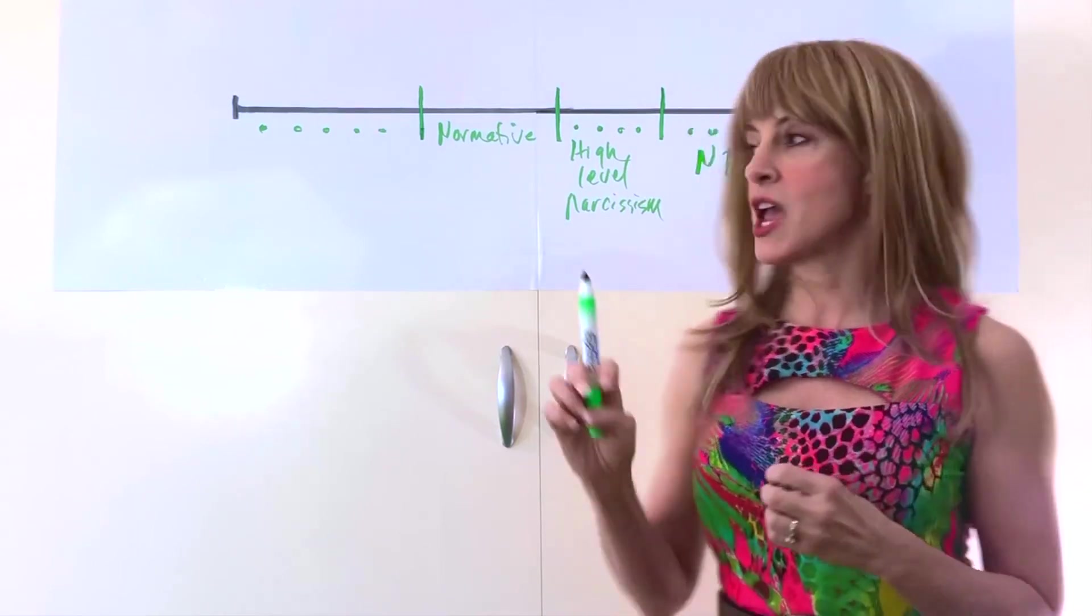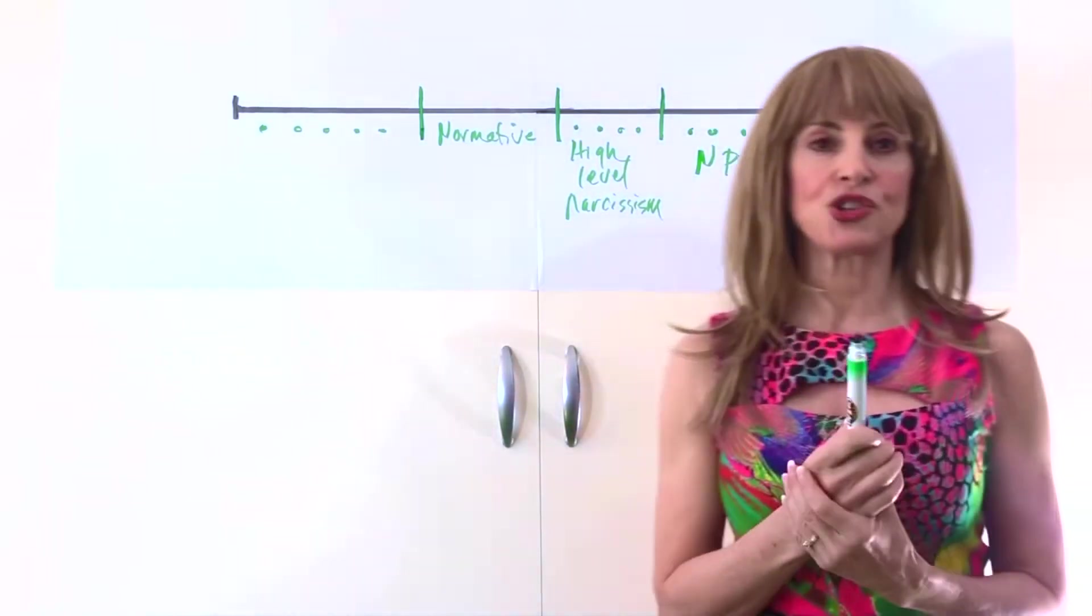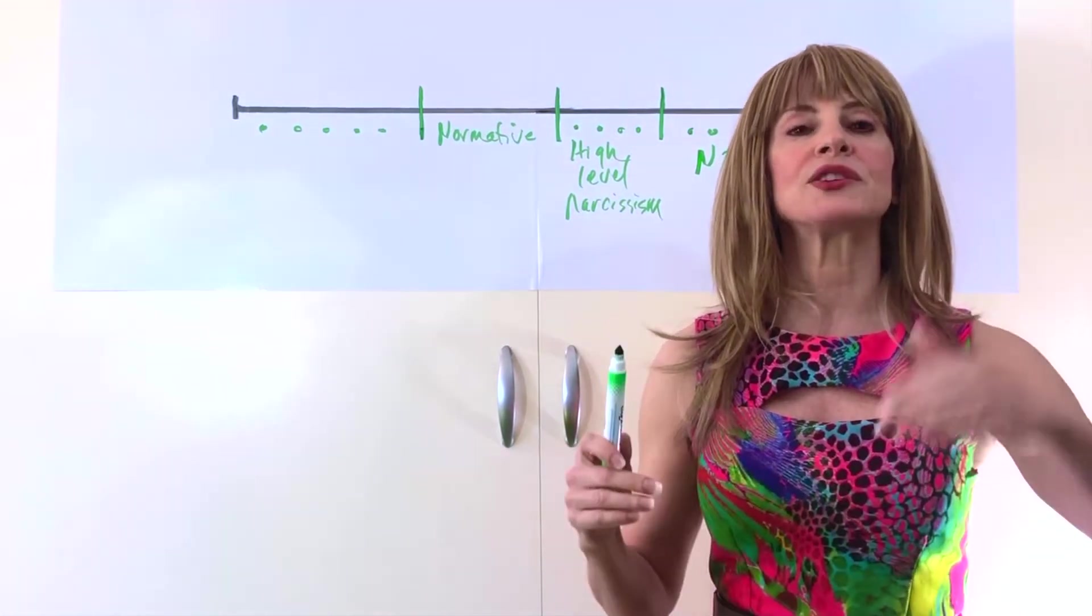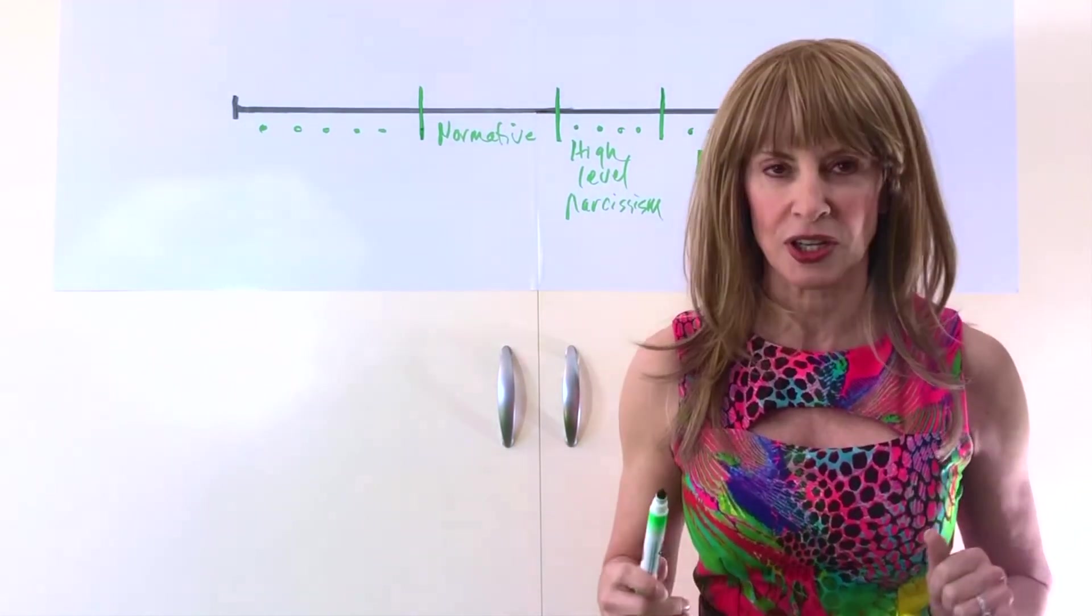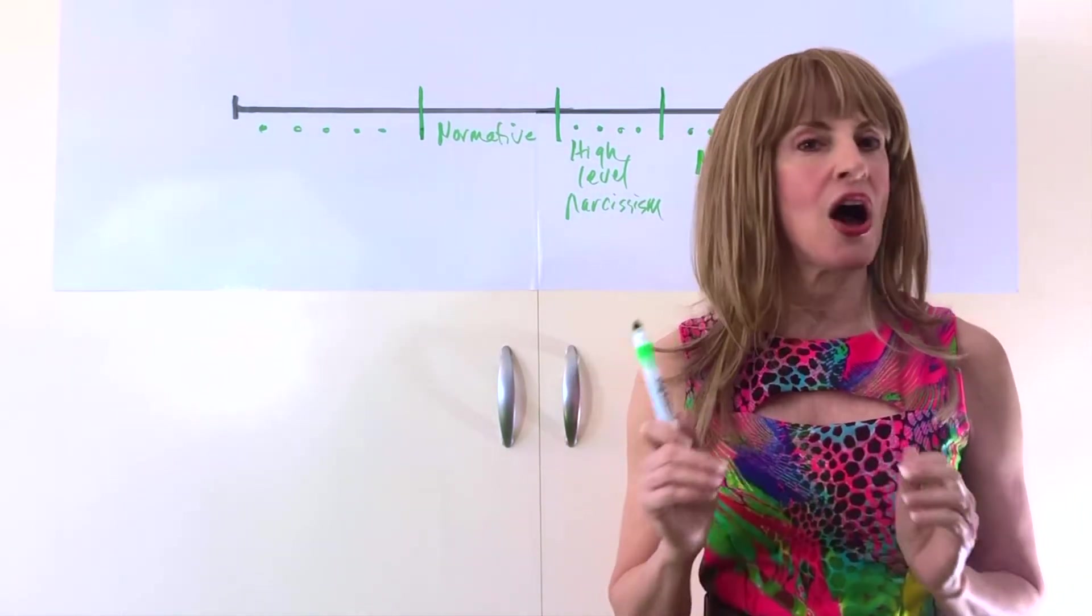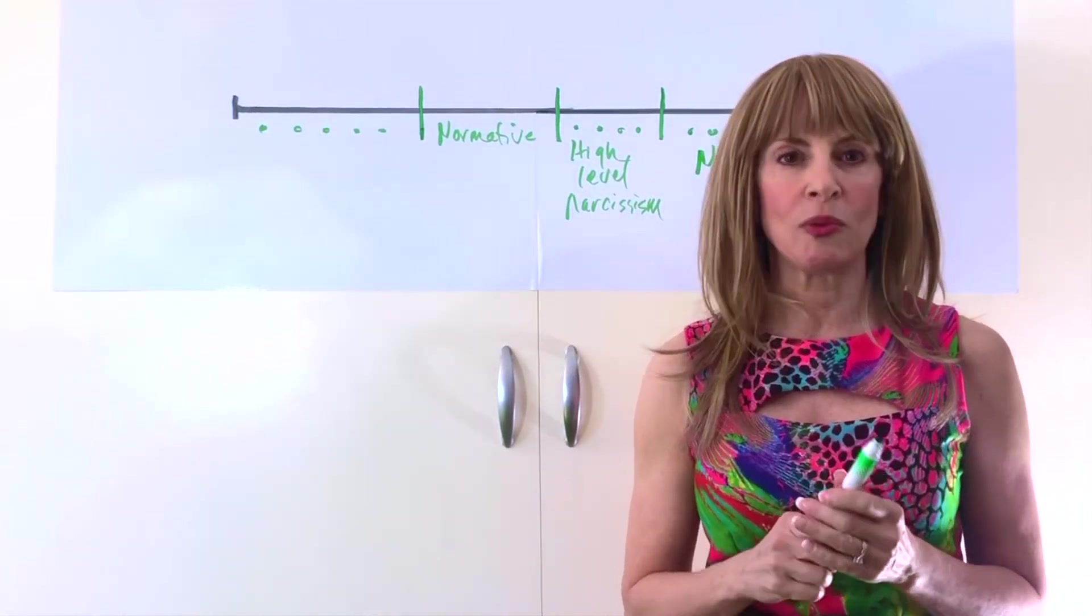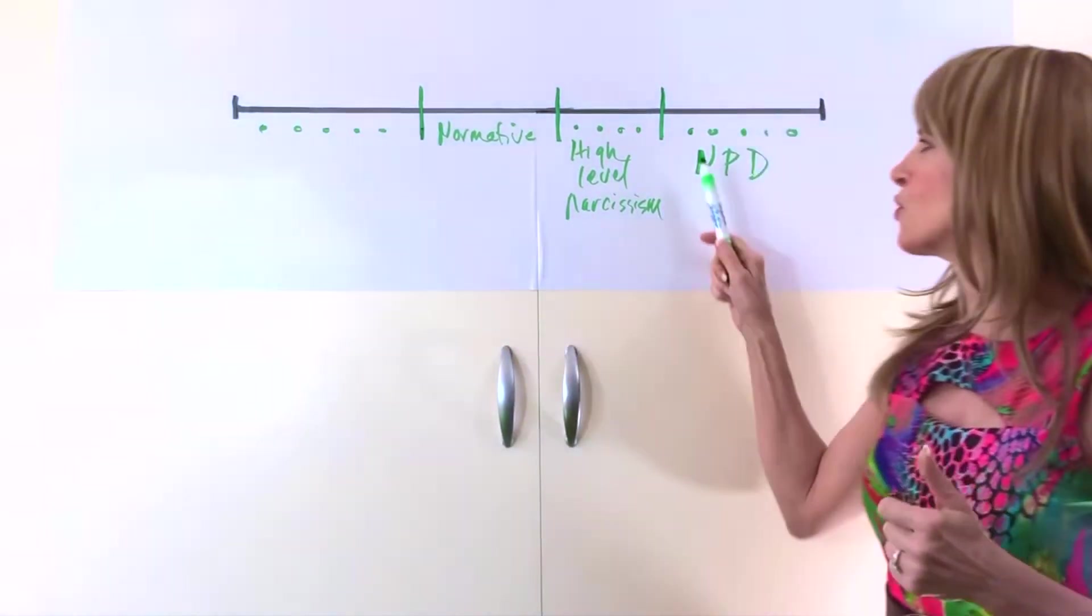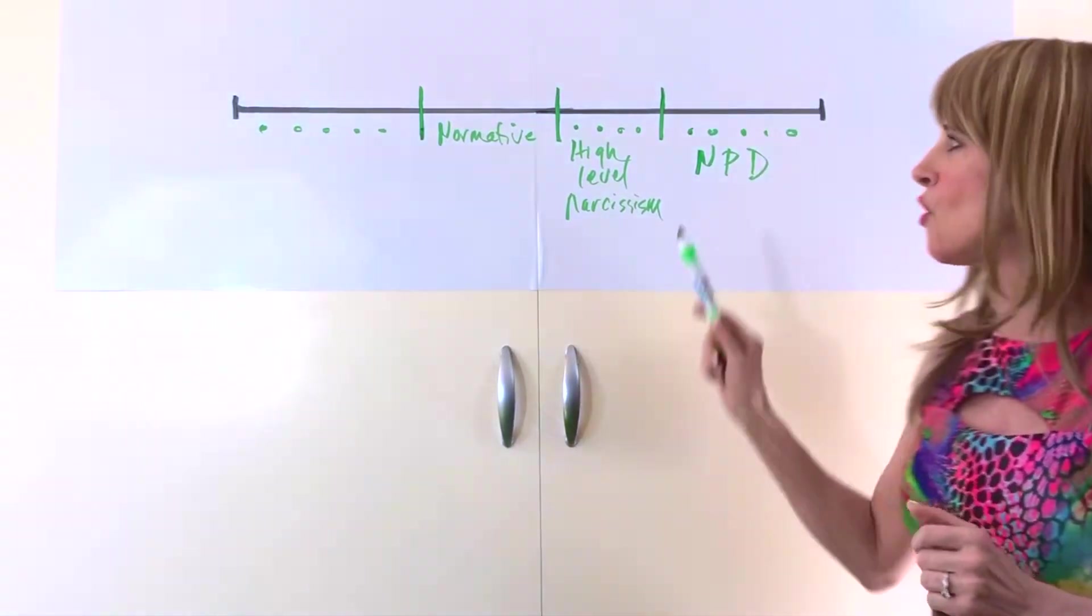So if they have a high school education, say they feel that they should be president of the university. You see it's completely disordered and out of the realm of what we would just deem to be successful. And these folks do not have a high level of success at all.